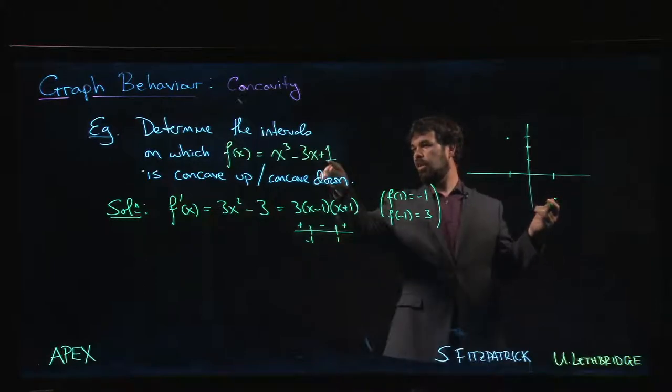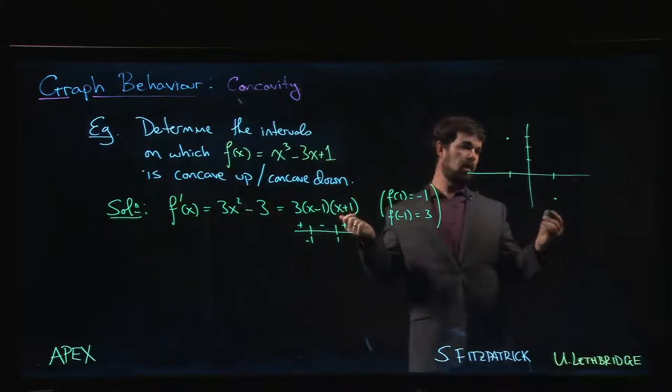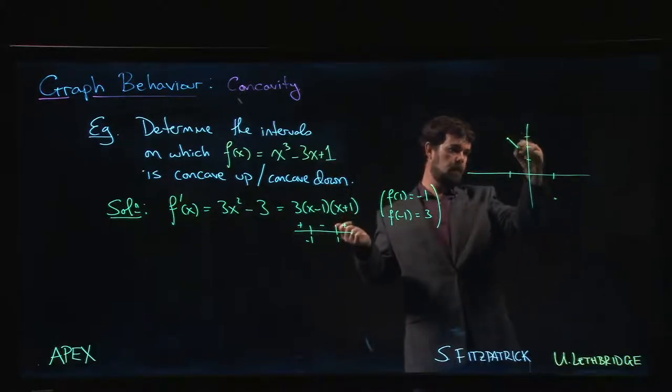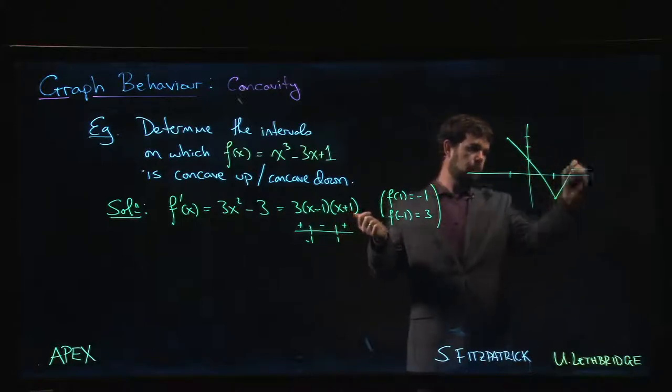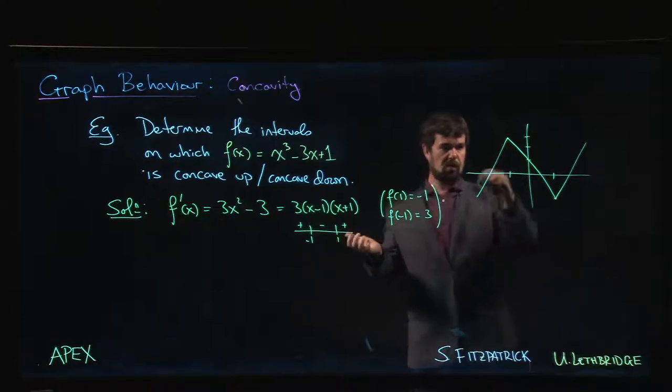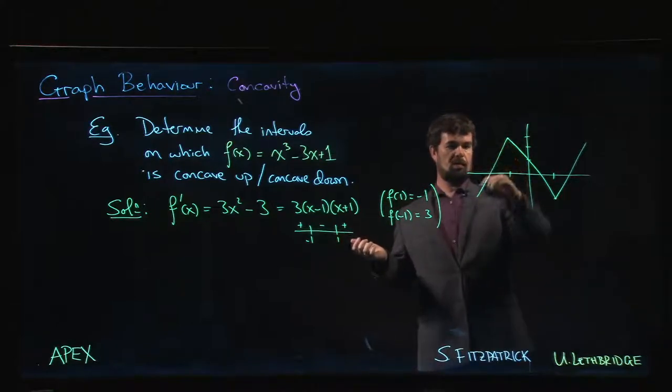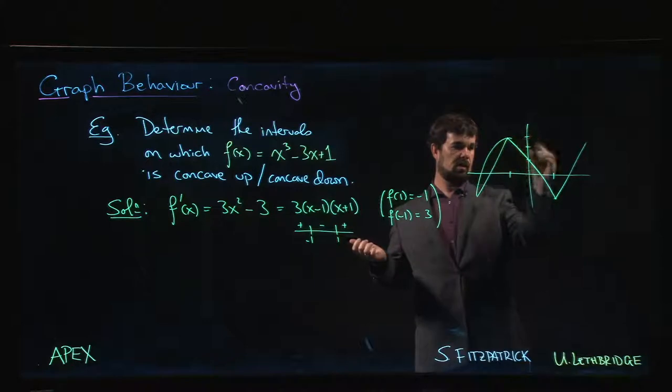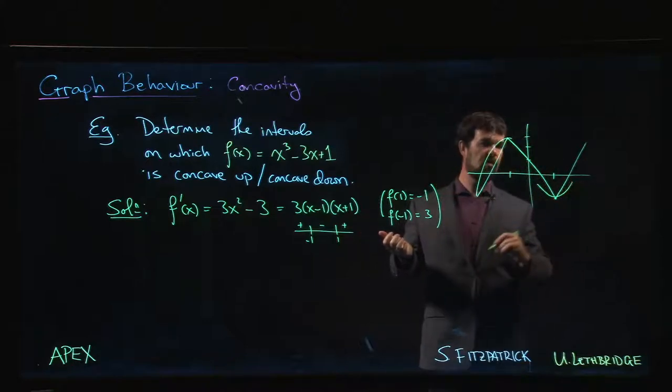We also know that there's a y-intercept at 1. So we sort of have this kind of picture. But we know that's not quite right. We should smooth this out. It should be sort of like this.